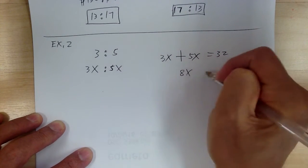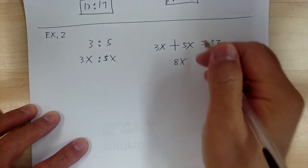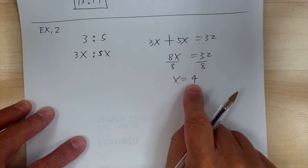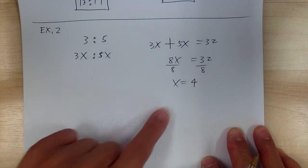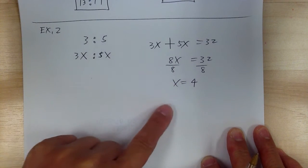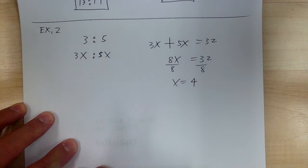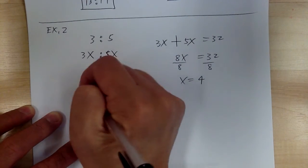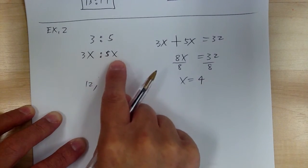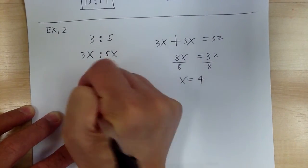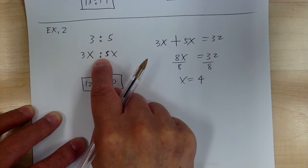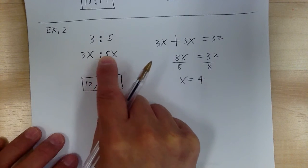Adding together gives 8x equal to 32. Divide by 8, so x equals 4. Do not box this as your final answer — this is only the multiplier. The question asks for the two numbers, so: first number is 3x = 12, second number is 5x = 20. Use a comma because it asks for numbers, not a ratio — do not use a colon.